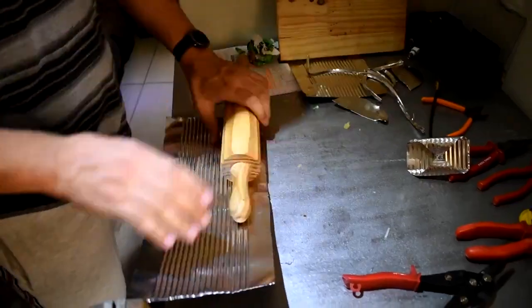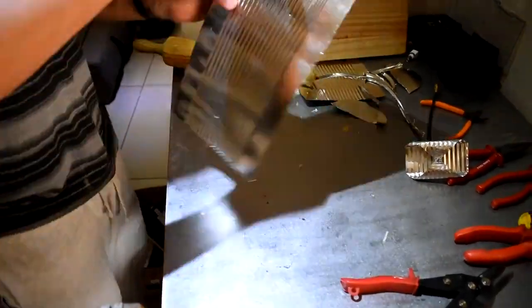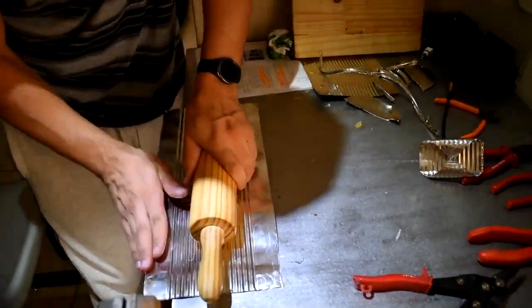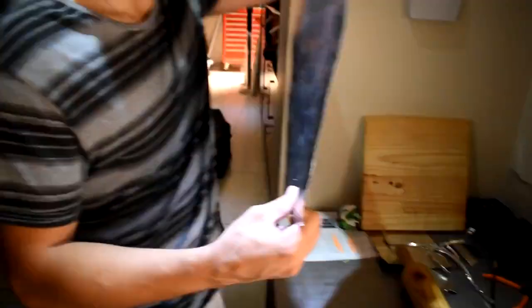Due to the corrugated nature of the metal sheet we are using, it is increasingly difficult to get the sheet as flat as possible. Therefore, it is recommended to use a rolling pin to make this process easier.